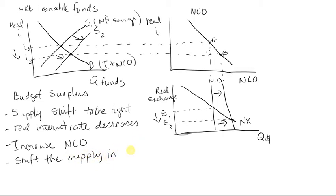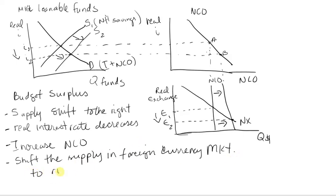That shift in the foreign currency exchange market to the right is going to depreciate the dollar. So that's a budget surplus.